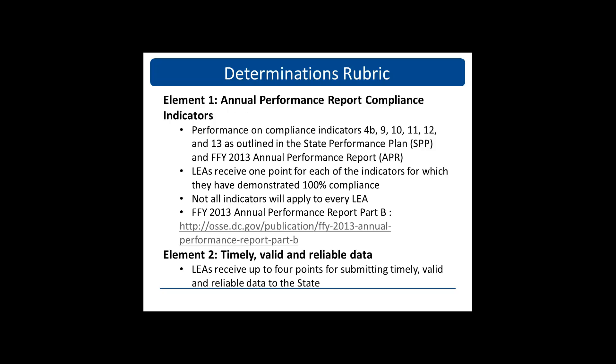The next few slides review the elements used to calculate your determination score. Element 1 is the Annual Performance Report Compliance Indicators for 4B, 9, 10, 11, 12, and 13. A description of each indicator can be found in the Enclosure 1 rubric. Not all indicators apply to every LEA. For example, Indicator 12, which is C to B transition, would only apply to those LEAs that serve that population of students.